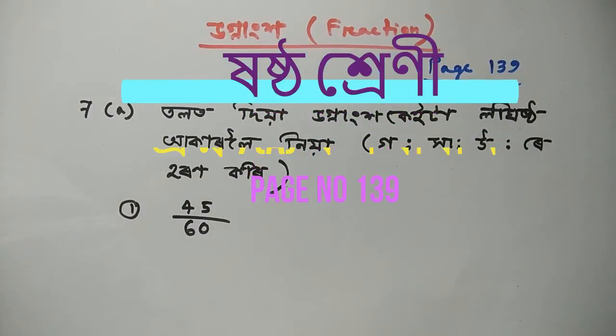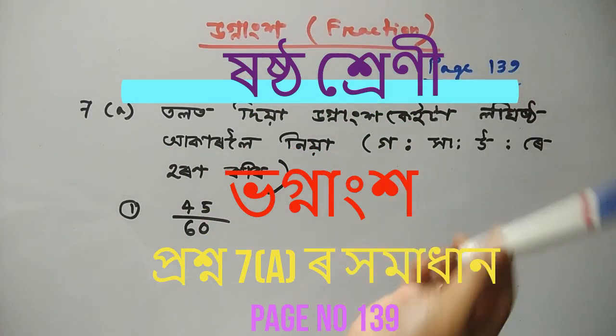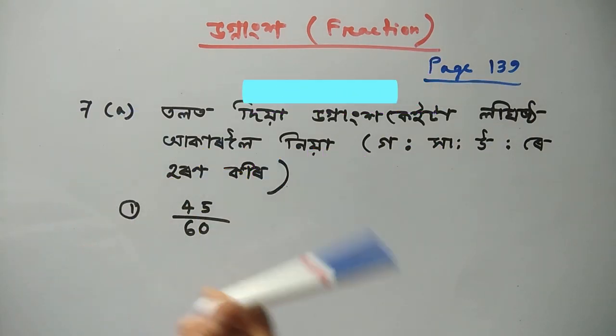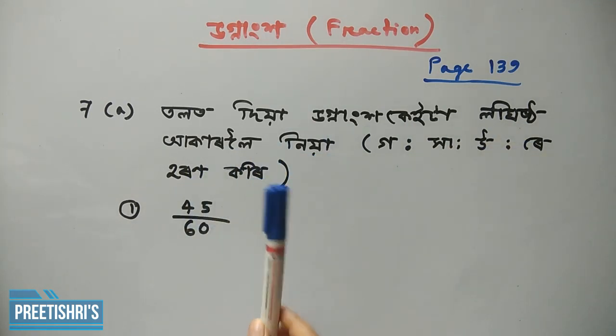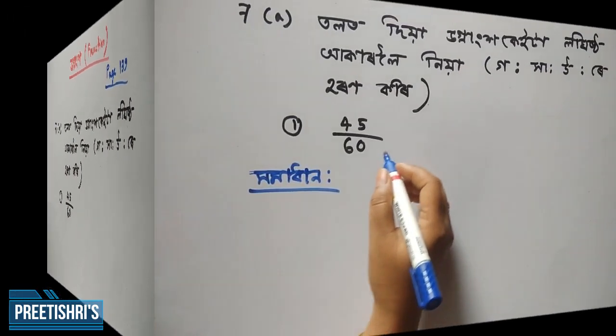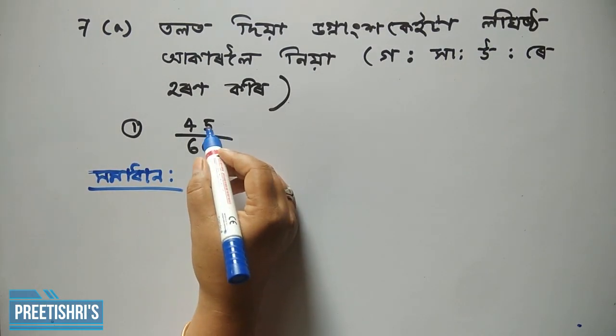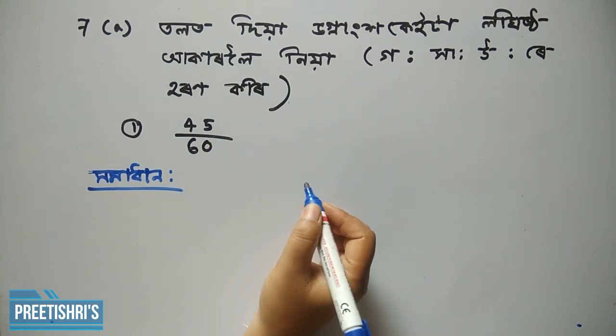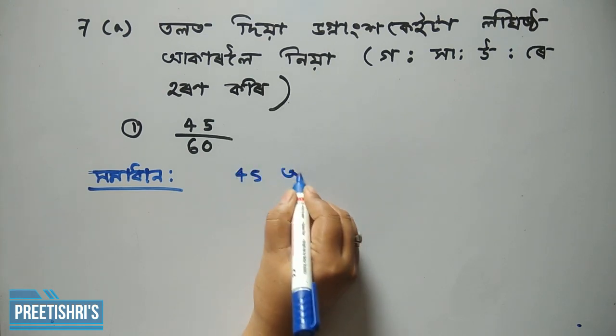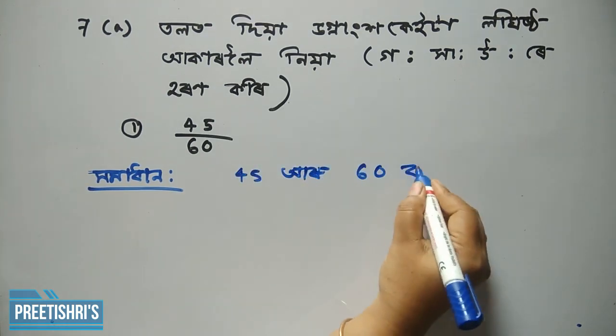This question is where we will find the LCM. Starting with 45 by 60, I will show you the method. First, I will give you these 4.5 and demonstrate the factorization process.